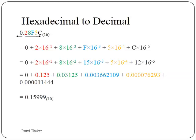Hexadecimal to decimal: we multiply by the negative powers of 16 starting from the bit next to the decimal point. So: 2 × 16⁻¹, 8 × 16⁻², F × 16⁻³, 5 × 16⁻⁴, and C × 16⁻⁵. The alphabetic values are converted to decimal: F = 15 and C = 12. The answer for 0.285FC from hexadecimal to decimal is approximately 0.15999 in decimal.